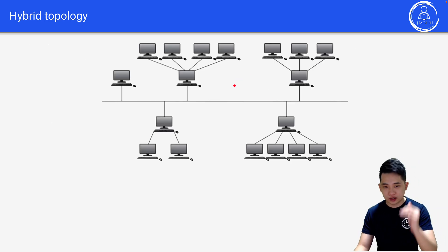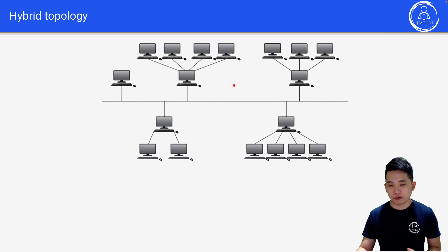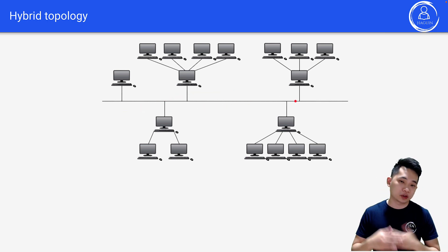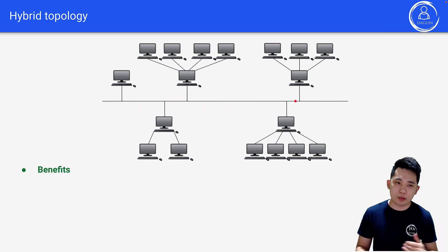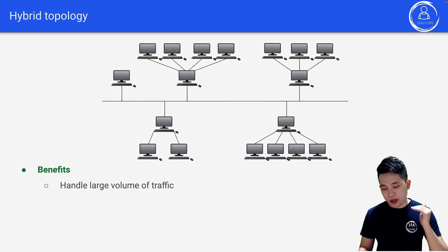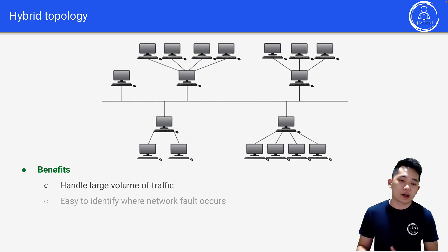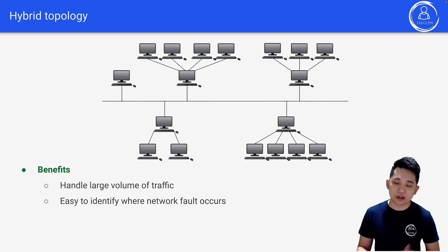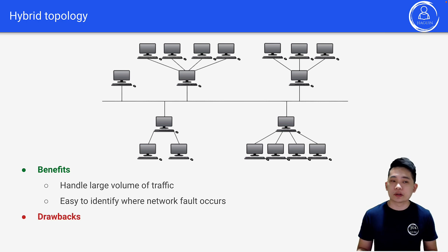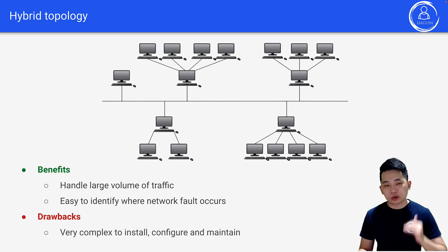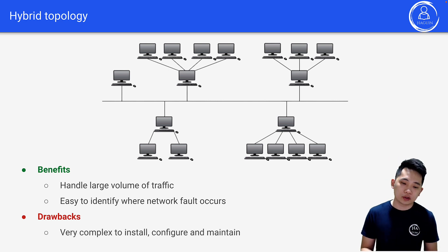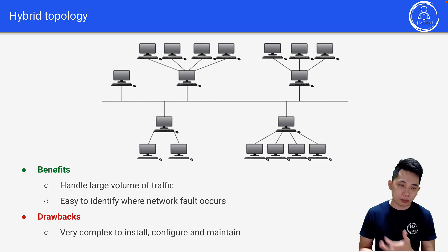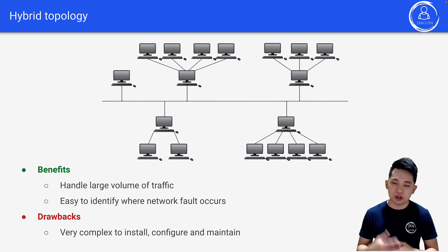Hybrid topology is a mixture of different topologies — for example, a combination of bus and star topology. Benefits include being able to handle large volumes of traffic and making it easy to identify where network faults occur. The biggest drawback is that it is very complex to install, configure, and maintain because different topology types must be combined.